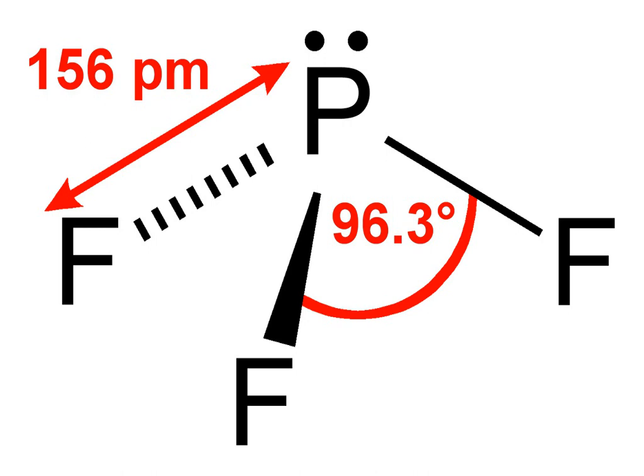2 PCl3 + 3 ZnF2 → 2 PF3 + 3 ZnCl2. Biological activity: Phosphorus trifluoride is similar to carbon monoxide in that it is a gas which strongly binds to iron in hemoglobin, preventing the blood from absorbing oxygen.